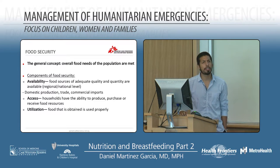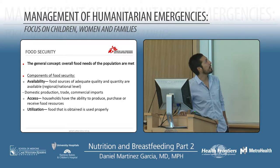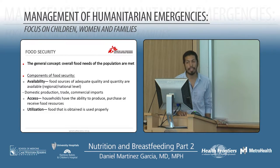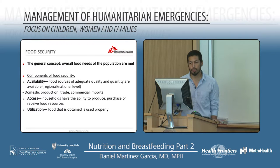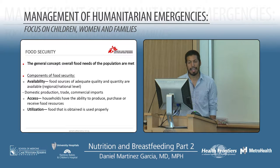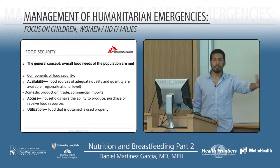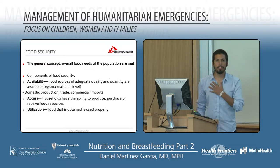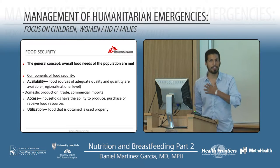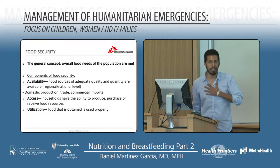Now some terms around food security — availability, access, and use. Availability means you have food sources of adequate quality and quantity at the regional or national level. Access means the household has the ability to produce, buy, or receive food. You can have a lot of food in the market, but if you don't have the money to buy it, you don't have access — there is availability, but you lack access.